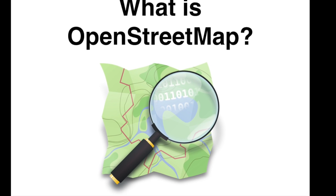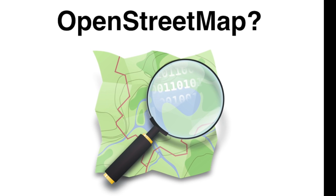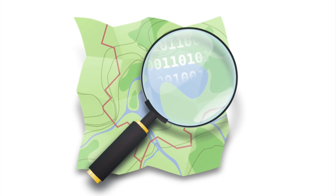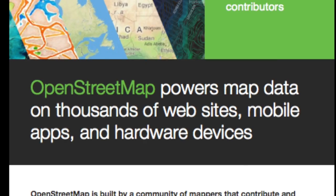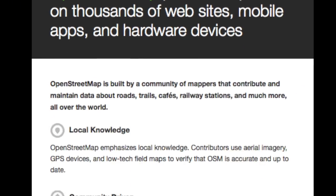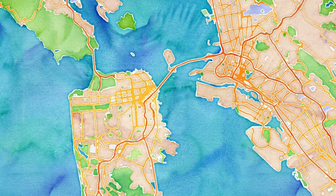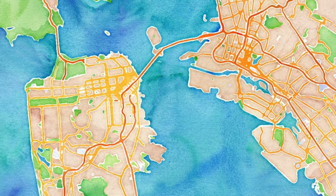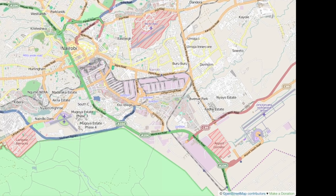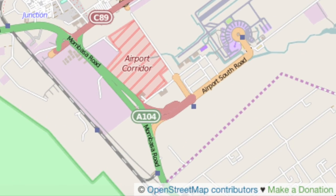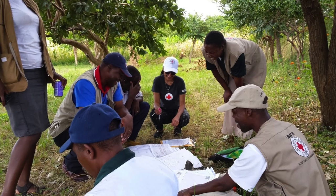OpenStreetMap.org is a free map of the world that anyone can edit. Think Wikipedia, but for maps. OpenStreetMap allows anyone to view, add, edit, and use map data of anywhere on Earth. It's free and open source, meaning there's no cost and very few restrictions on how you can use the data.